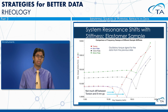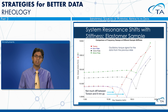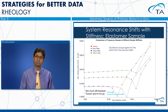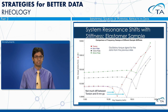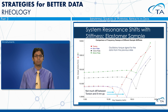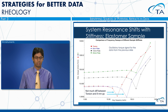Looking at oscillation torque for the same data, there is a sudden drop attributable to system resonance — the point at which we hit the sample's resonance frequency during testing. The best way to address this is to change the sample stiffness by changing the geometry. Between the 8 mm parallel plate and torsion rectangle there is little difference, but stepping up to the 25 mm parallel plate shifts the resonance frequency toward the upper end of the test range.